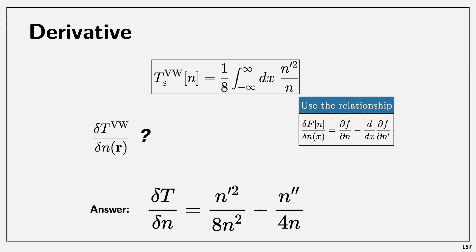The functional derivative depends on the first derivative, the second derivative, and the density itself — and this is just for one electron. That should give you a hint that the functional derivative of the kinetic energy in general is a pretty complex function.